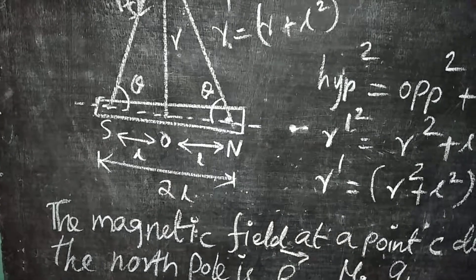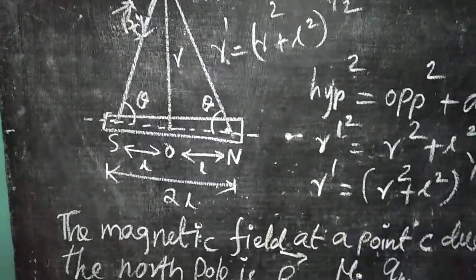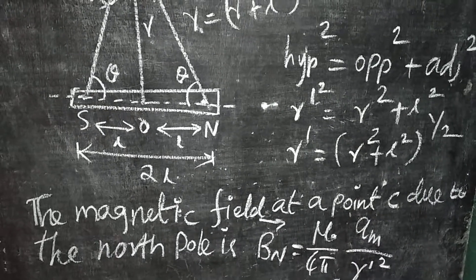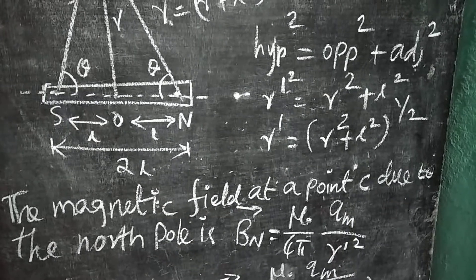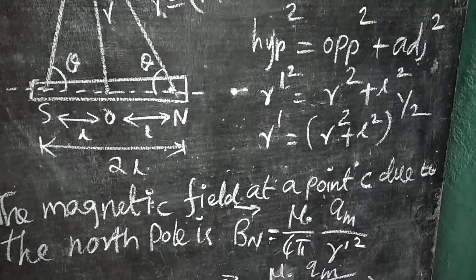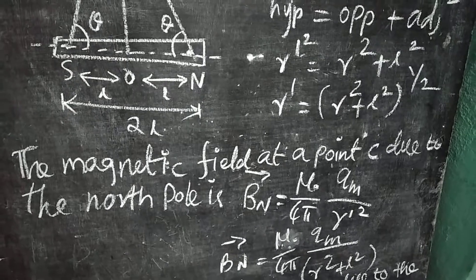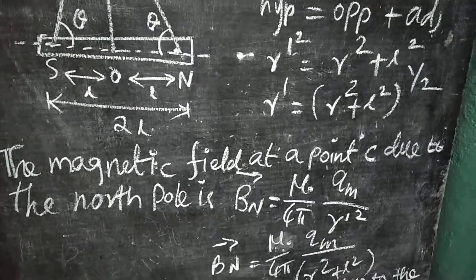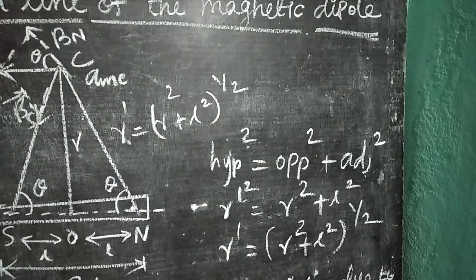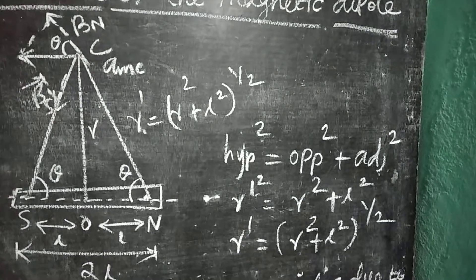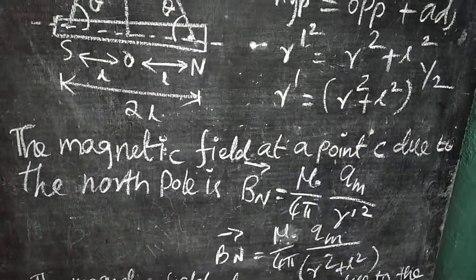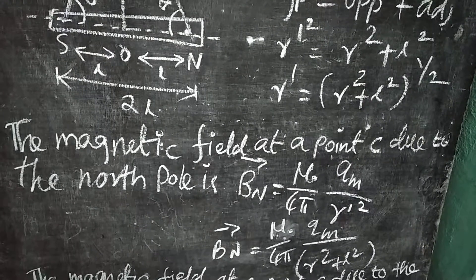To find the magnetic field at point C, the magnetic field at point C due to the north pole is BN vector equal to mu-naught over 4 pi times qM over R prime squared. This equation is obtained from Coulomb's law. Substituting R prime squared equals R squared plus L squared, we obtain BN vector equal to mu-naught over 4 pi times qM over R squared plus L squared.